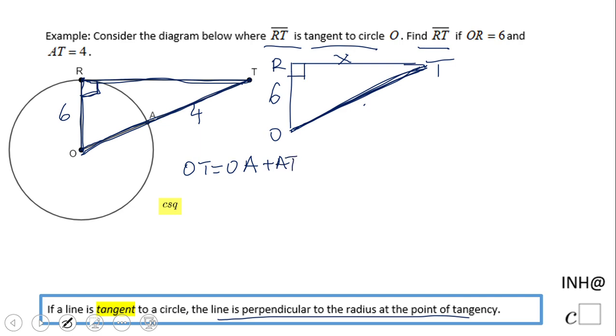And if we take a look, OA is nothing else than the radius, so it's 6. AT is given to us, is 4. So OT will be 10.